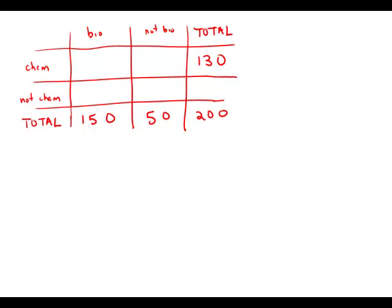Going down the column all the way on the right, 130 in chemistry, that means there must be 70 not in chemistry in order for the total to add up to 200.